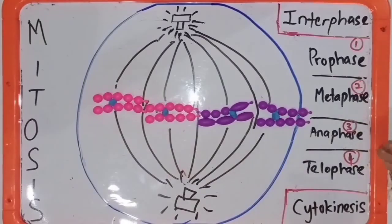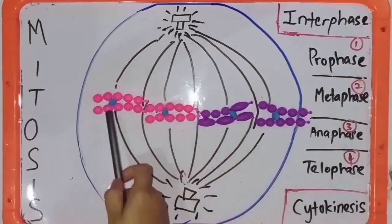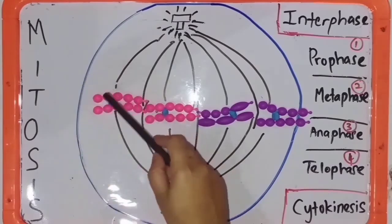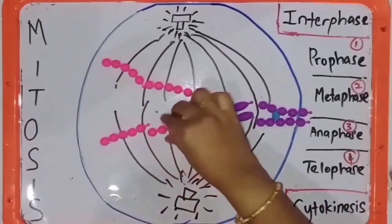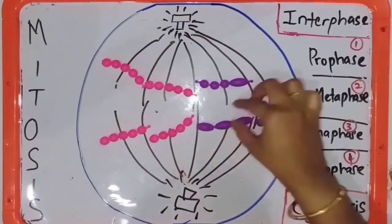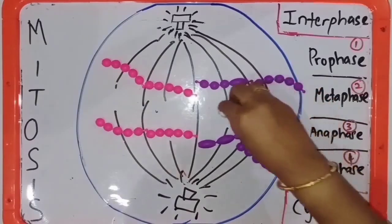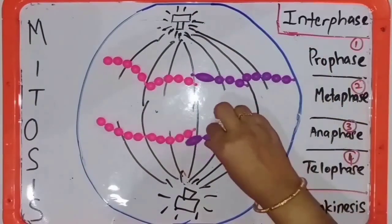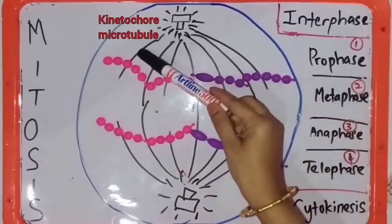Next is the anaphase stage, the third phase of mitosis. During anaphase, the centromere that links the two sister chromatids breaks, causing the sister chromatids to move toward the opposite poles of the cell. Sister chromatids move toward opposite poles due to the kinetochore microtubules. The kinetochore microtubules shorten and pull the sister chromatids toward the opposite poles of the cell.